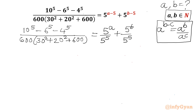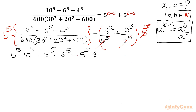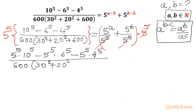Now I will multiply both sides by 5^5. On the left side I also write 5^5, and I can cancel 5^5 with the denominator 5^5. On the left hand side, multiplying gives: 5^5 times 10^5, minus 5^5 times 6^5, minus 5^5 times 4^5, all over 600 times (30² + 20² + 600).